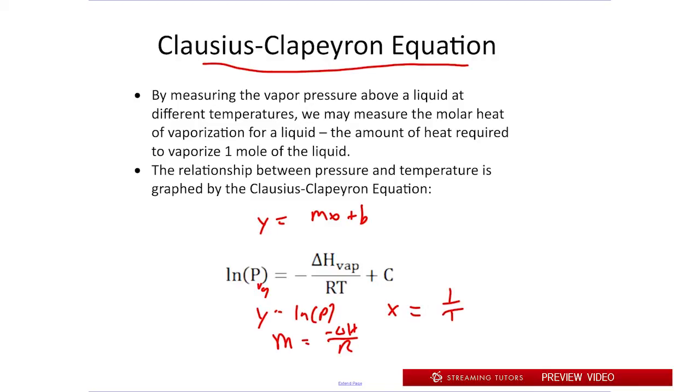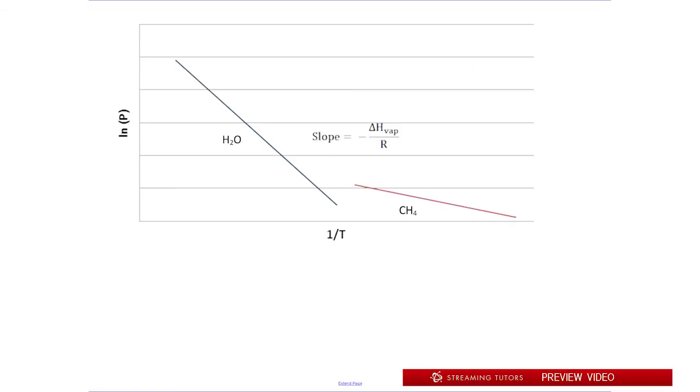So let's see what happens if we measure the vapor pressure at different temperatures and graph the results. So we get lines that look like this. On the left side we have H2O. On the right side we have CH4. And we see that this forms a relatively linear line if we map it between ln of the vapor pressure and the inverse of temperature. And then the slope of each of these lines is simply this negative delta H of vaporization over R.